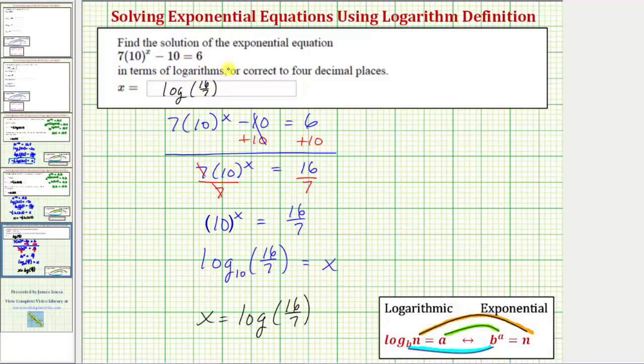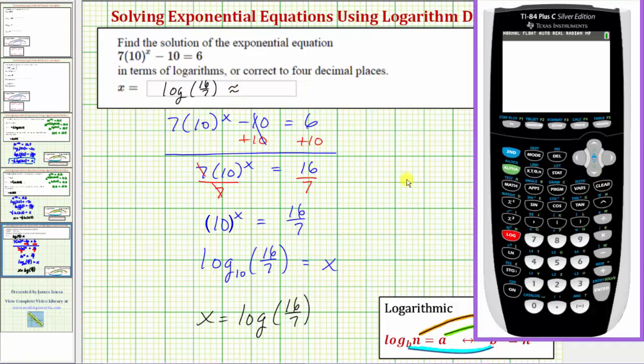Let's also get our decimal approximation to four decimal places. Here's the common log button, so log 16 divided by seven, close parenthesis, and enter. To four decimal places, we have approximately 0.3590.